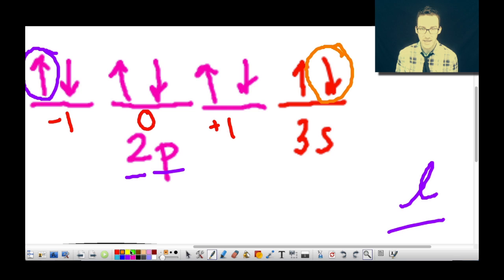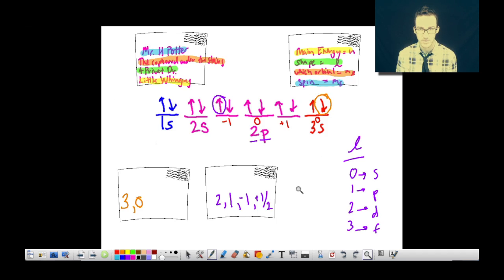And so for S orbitals, you will only ever have a zero orientation because there's only one. Unlike the P orbitals where there's three and we have to distinguish between which one we're talking about, if we're talking S, there's only one of them per main energy level.